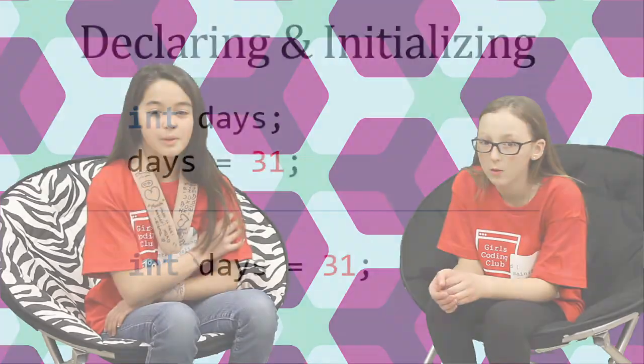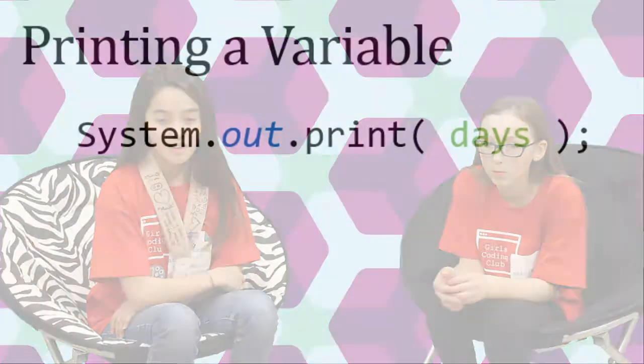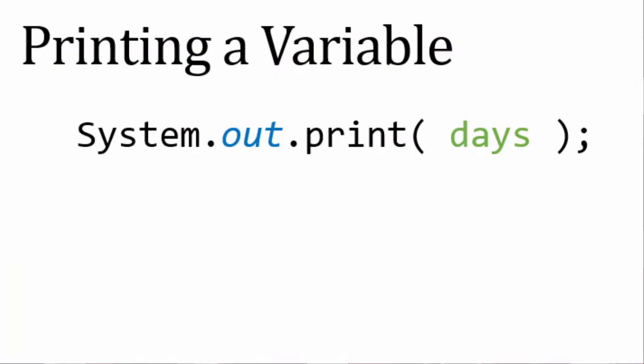If you want to print the value of a variable, just type the name, without double quotes, into the parentheses of a print statement. For example, to print the value of variable days, do this.